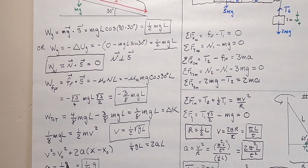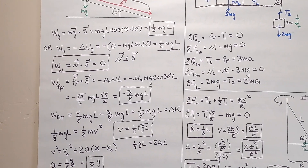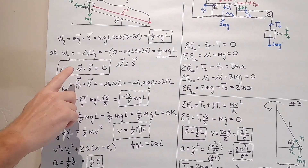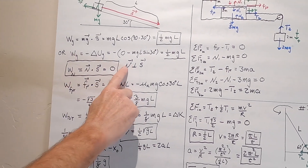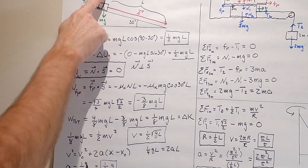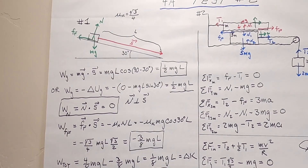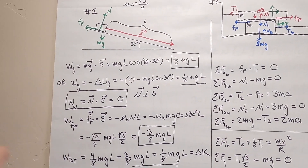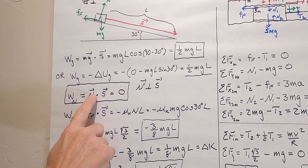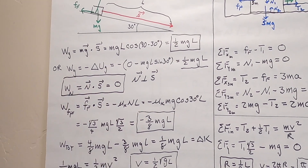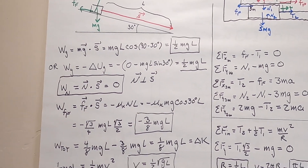I also asked what is the work due to the normal force. Well, the normal is perpendicular — normal is this way and s is that way. They're perpendicular. The dot product gives me zero. So there's the work due to normal.